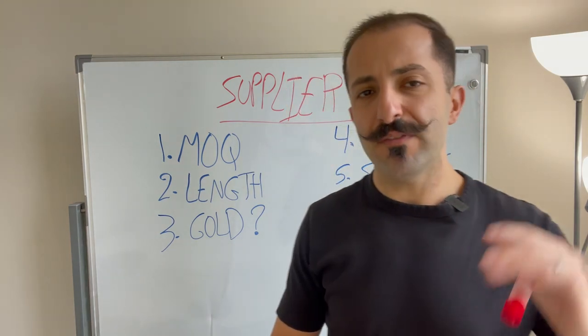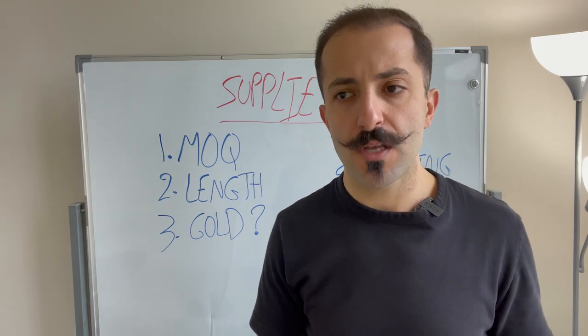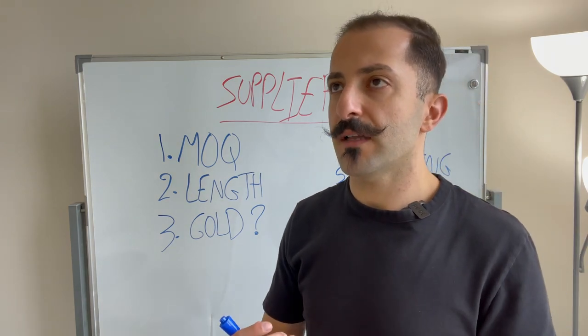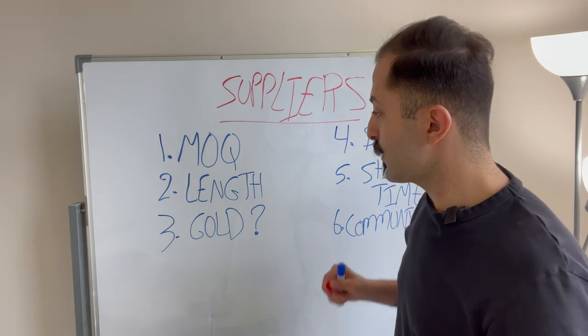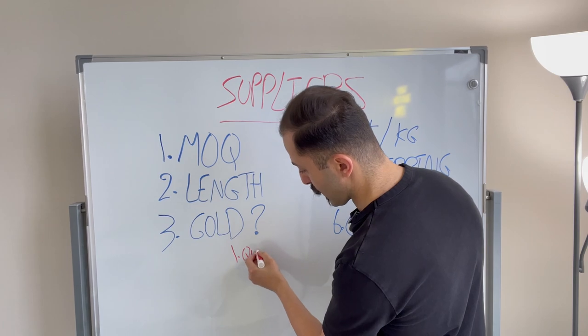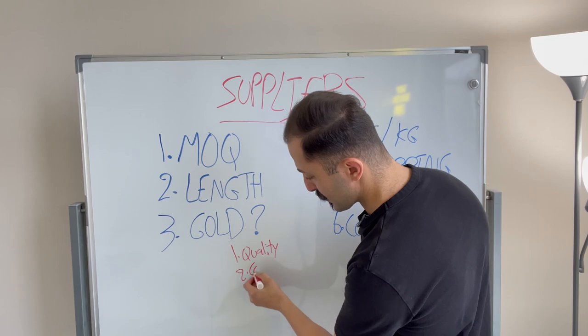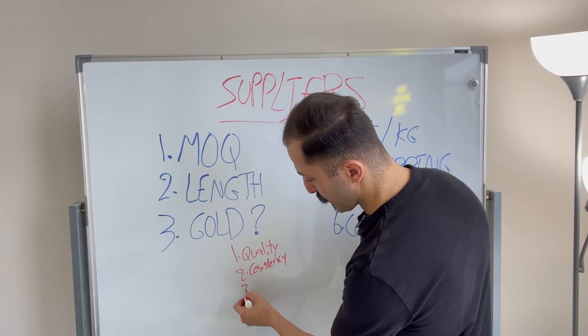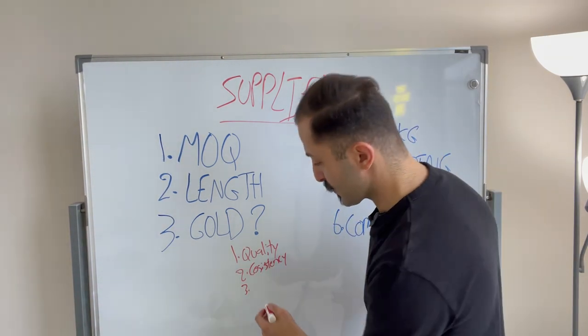Now, why is having a good supplier important when it comes to your Amazon business? A few different things. One of them being that you want to make sure they guarantee your results and they guarantee you quality. So one of the main things is quality. The other thing is you want to make sure there is consistency. And the third thing is you want to make sure your business is scalable.